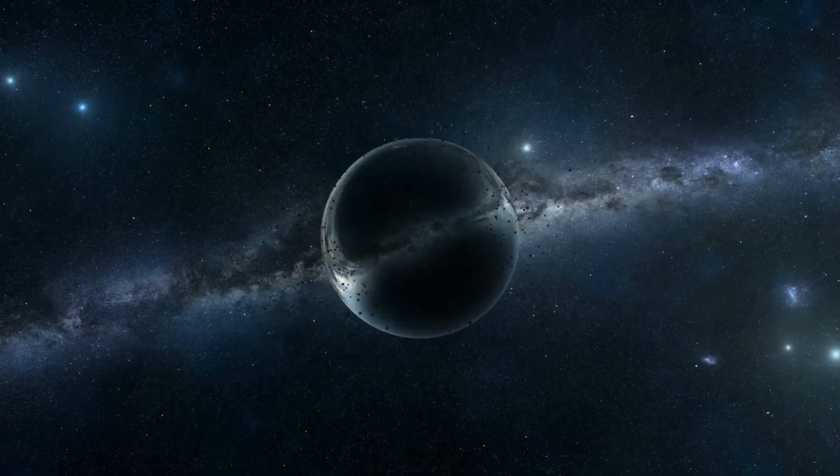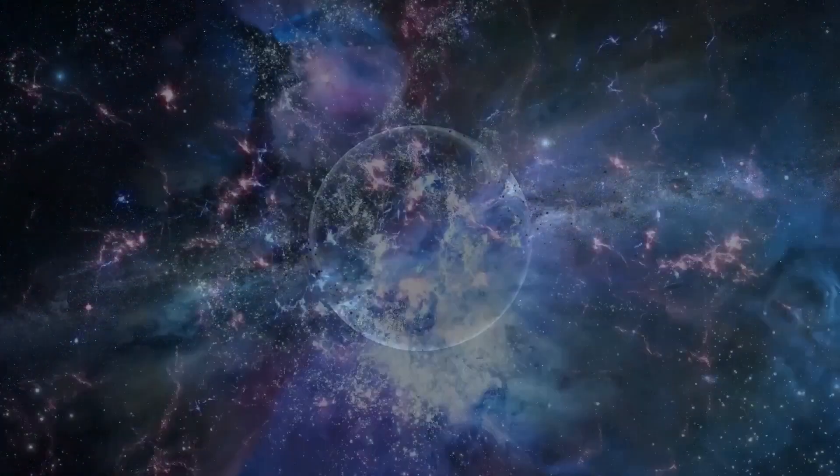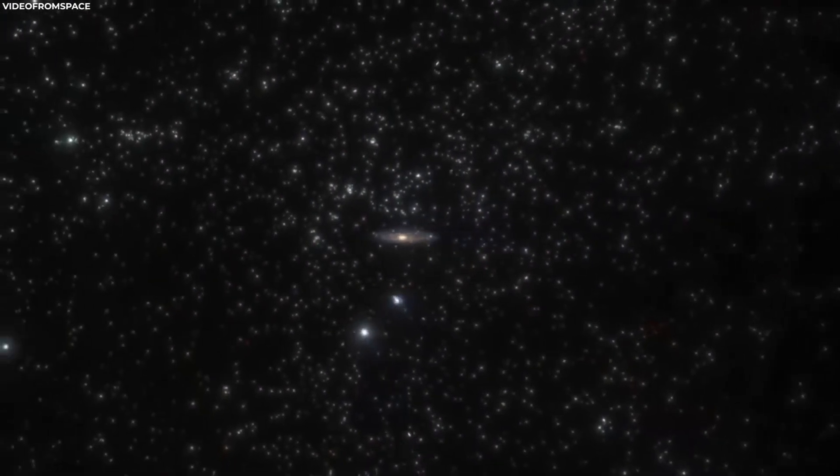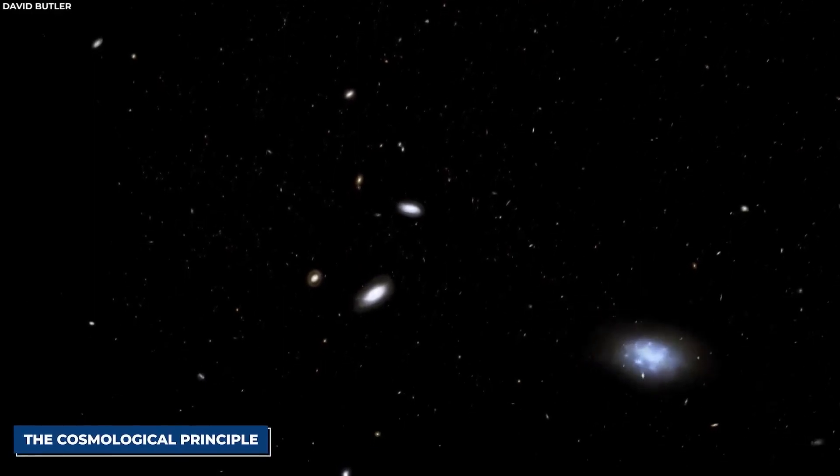The second theory paints a picture of a finite universe, but without a clear edge. Think of it like Earth. You can travel in any direction and eventually end up where you started. It's a universe that loops back on itself.